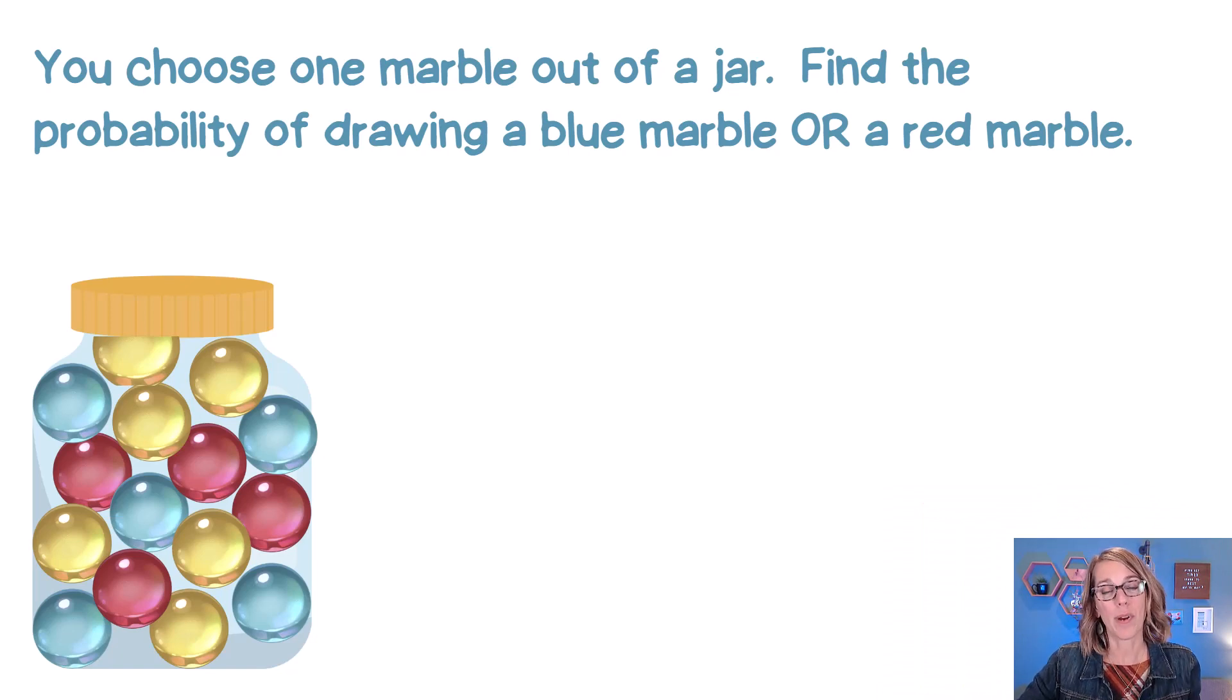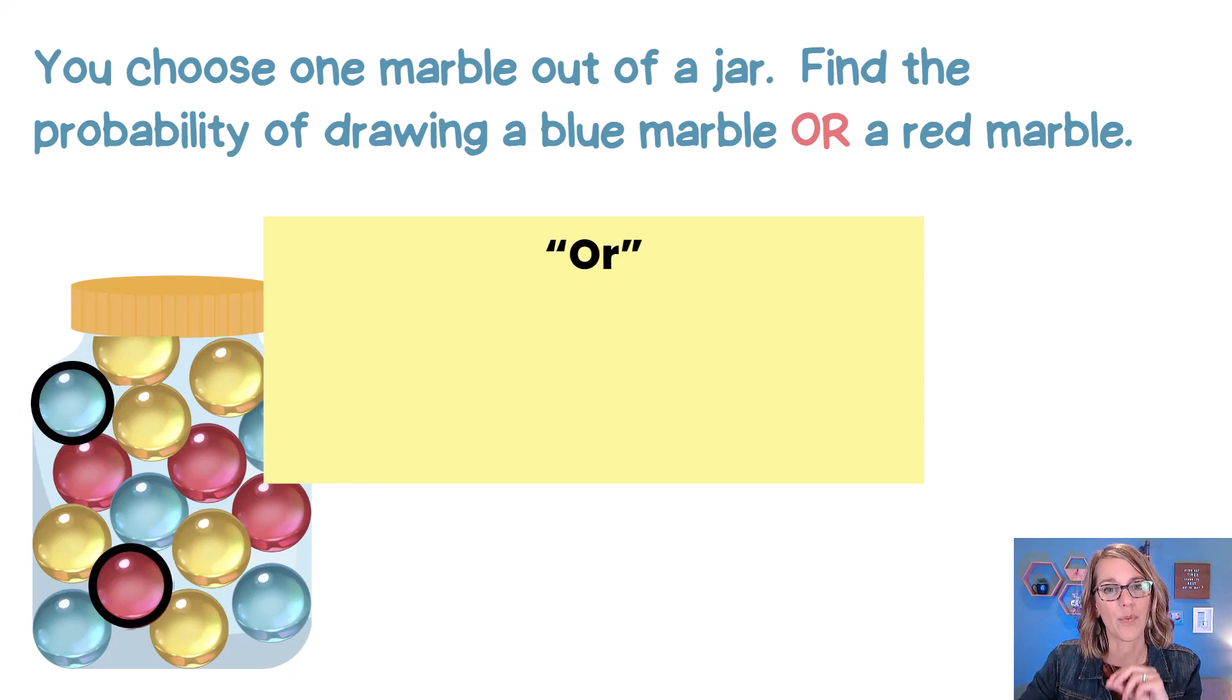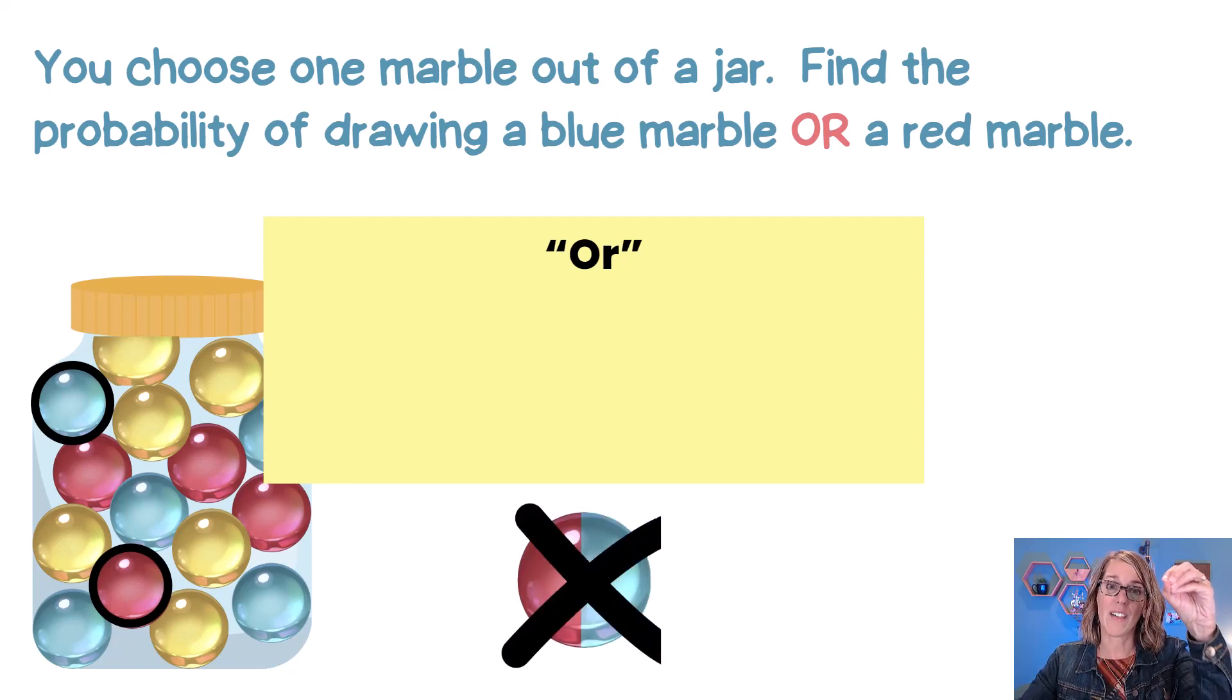We're going to draw a single marble and we want to know what the probability is of drawing either a blue marble or a red marble. Now when we're putting our formula together, the first thing that we need to decide is are these two events connected? Does one depend on the other or are they completely separate? Well if I draw a blue marble, that's totally separate from drawing a red marble. There's no way that I can draw a single marble and have it be blue and red at the same time.